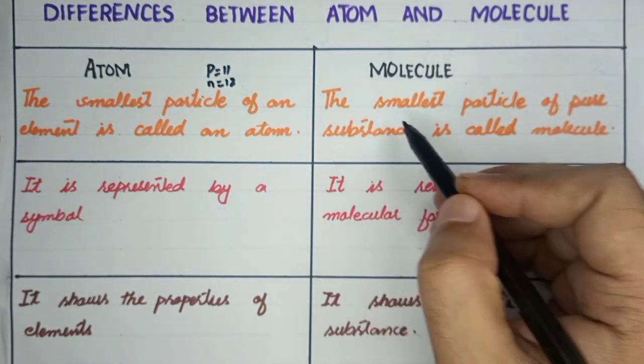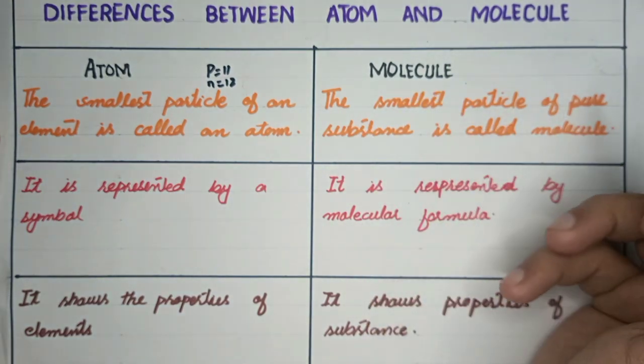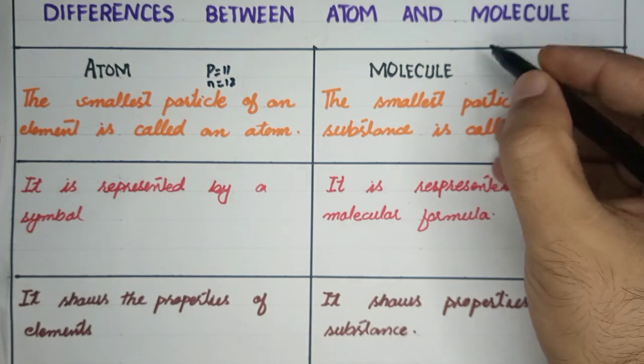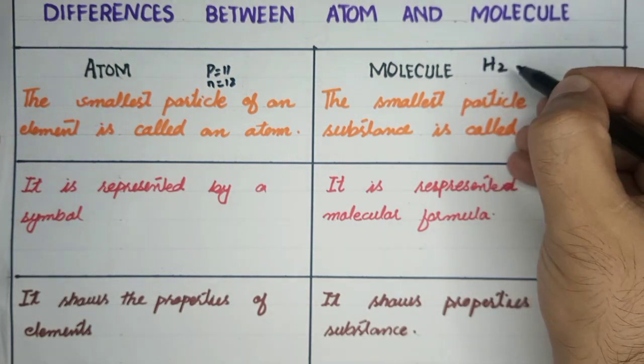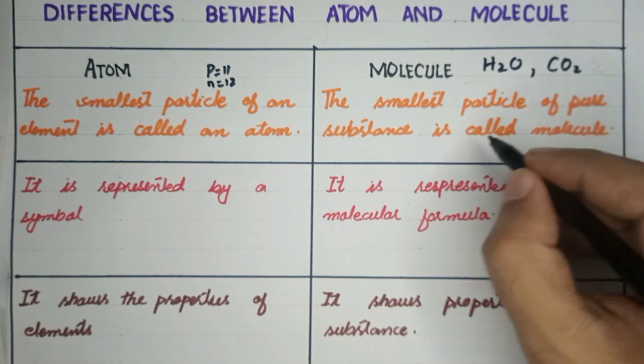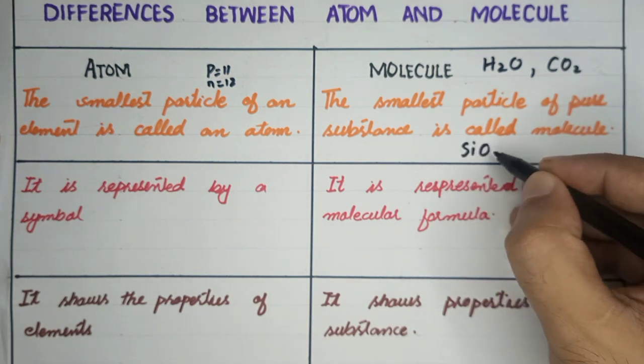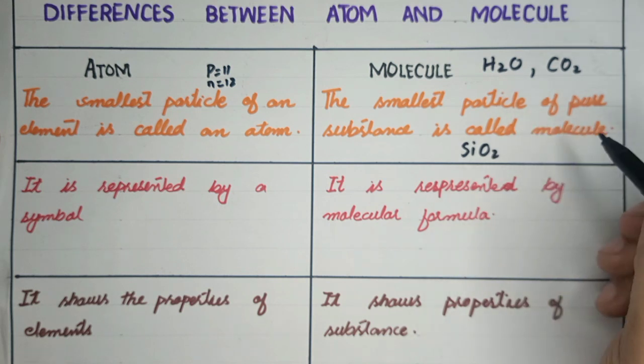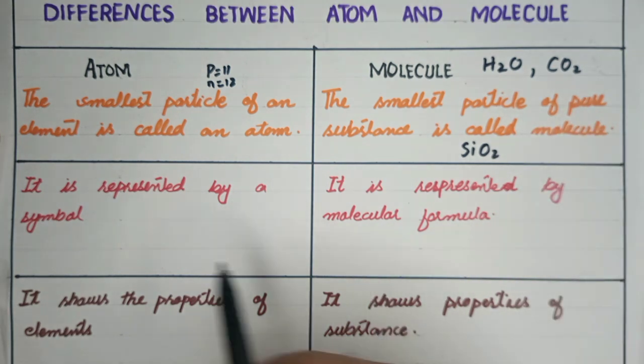What is the molecule? The smallest particle of pure substance is called a molecule. The water molecule is H2O, carbon dioxide is CO2, sand is SiO2. What is the smallest particle of pure substance?